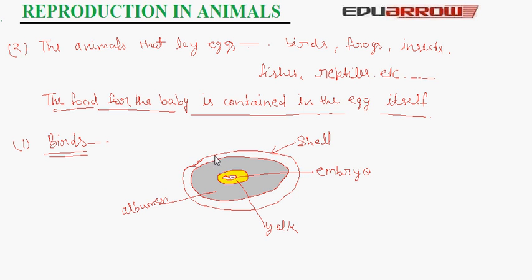This is the outer layer of an egg called the shell. It protects the egg. In the center of the egg there is a yellow part that is yolk. In the yolk the embryo has grown. This is the growing baby and this is albumen. It has water to grow. Yolk has developing baby called embryo.